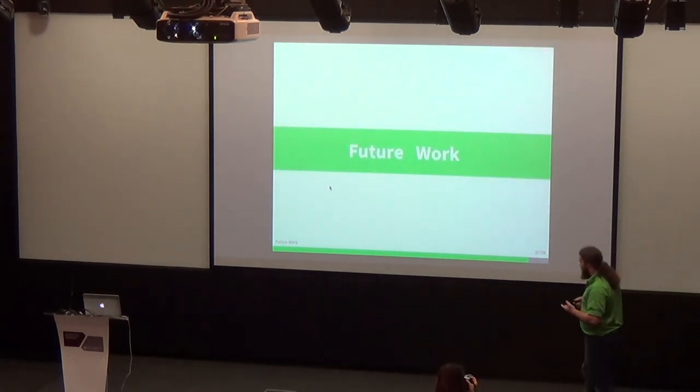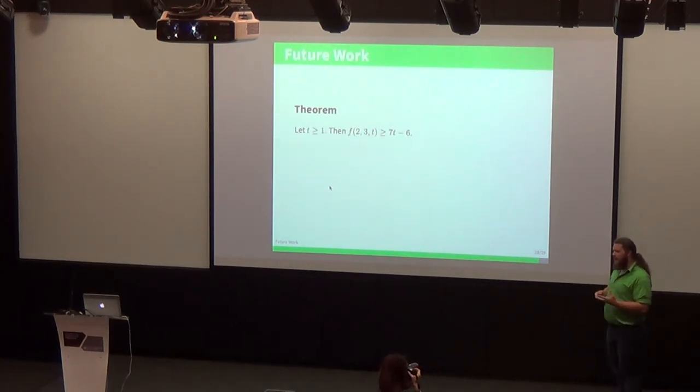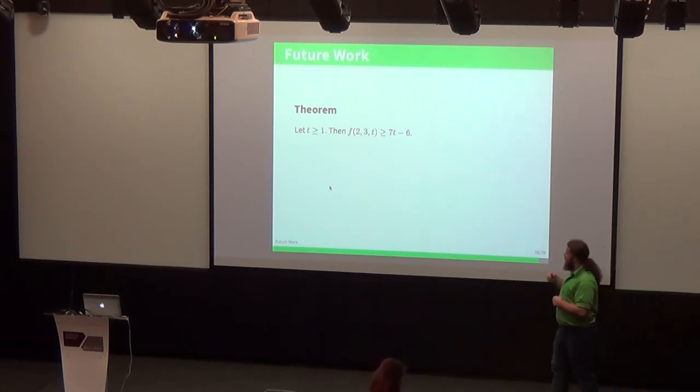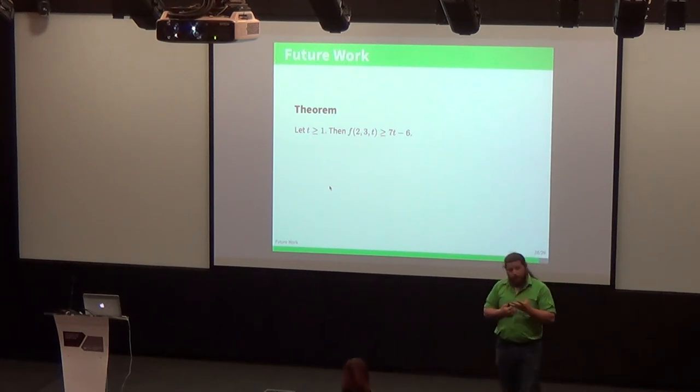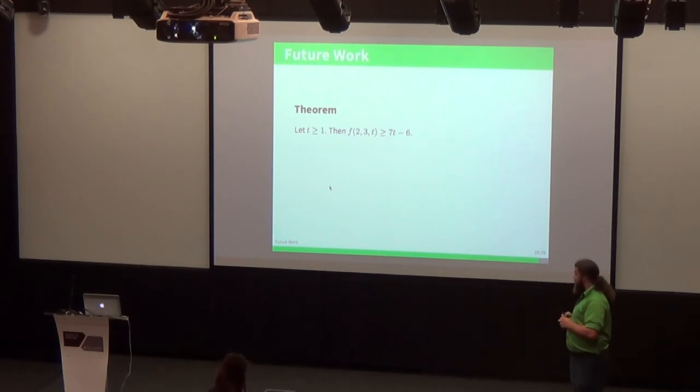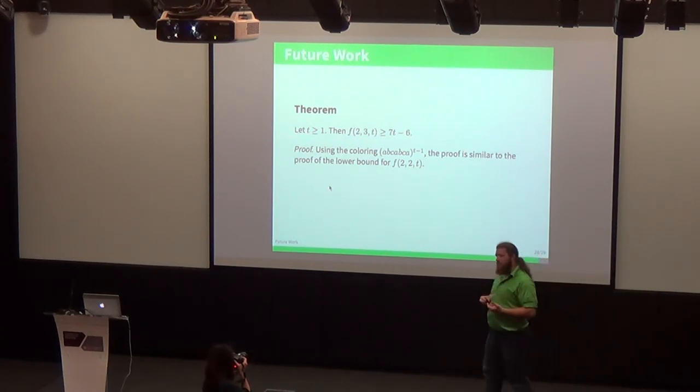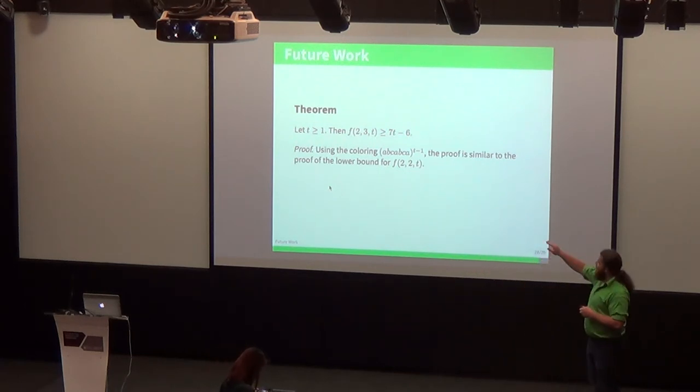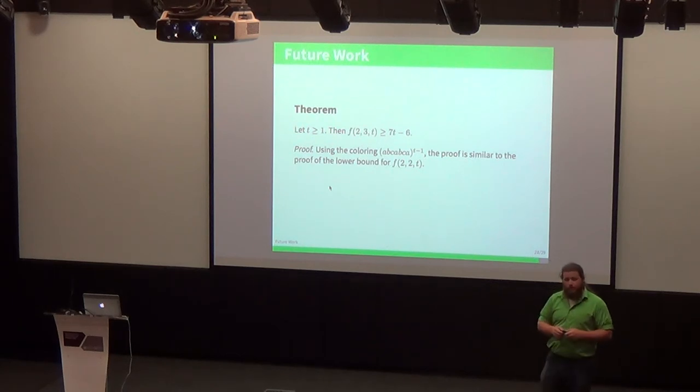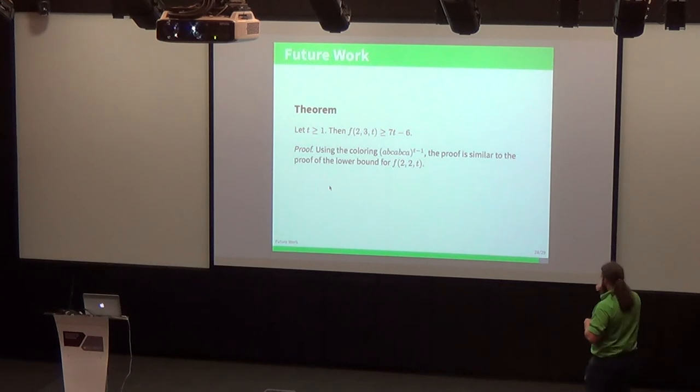Now I'd like to mention future directions that we could go in with this work. We've started to look at what would happen if we increased the number of colors. We were able to indicate a lower bound here: if we included 3 colors, f(2,3,t) is at least 7t minus 6. It uses a very similar construction to the lower bound for f(2,2,t). We've got that extra color in there, it's just that string ABC, ABC, A repeated t minus 1 times. It's pretty much an identical proof to what we used before. In fact, no matter how many colors you choose, whether it be 5, whether it be 50, this same string will work just with the proper number of colors. You repeat each color twice and tack an extra A on the end, repeat those t minus 1 times. That string will be sufficient to show that you have a lower bound.